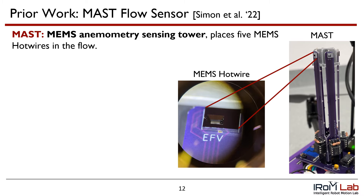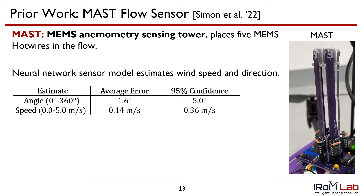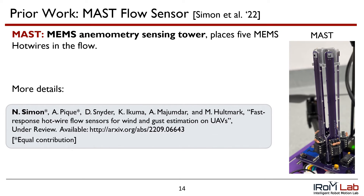The MAST, or MEMS Anemometry Sensing Tower, places five MEMS hotwires into the flow. A neural network sensor model estimates wind speed and direction from the five MAST voltages. The MAST's accuracy, from a wind tunnel calibration across 360 degrees and from 0 to 5 meters per second, is 1.6 degrees and 0.14 meters per second. For more details, including a comparison to existing anemometry techniques, please refer to our preprint, available online.